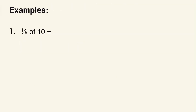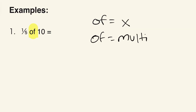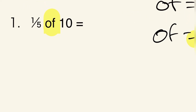We have some examples over here. The first example is one fifth of ten. The wording is a little different — instead of a multiplication sign, it says 'of.' Basically, 'of' means multiplication. So keep that in mind throughout these examples, because some of them use 'of' instead of the times sign.